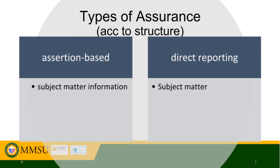There are also types of assurance engagements according to structure. In an assertion-based engagement, the responsible party is responsible for the subject matter information. In a direct reporting engagement, the responsible party is responsible for the subject matter, and the practitioner is responsible for the evaluation and measurement of the subject matter — which is also called the subject matter information.